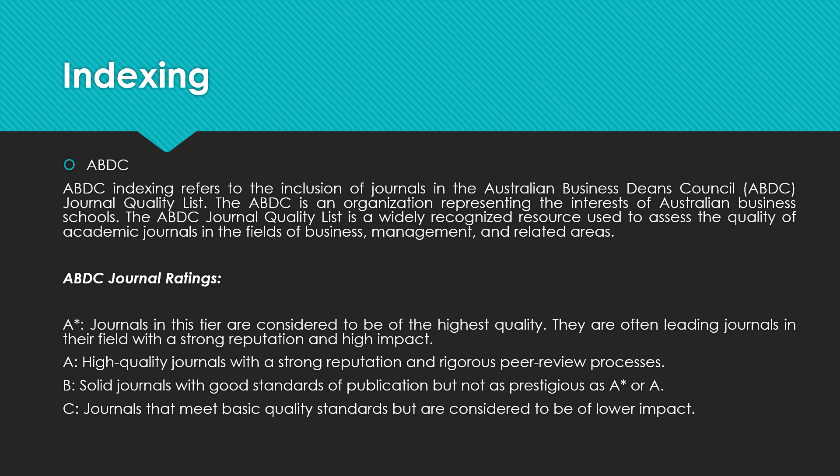In ABDC journal ratings, it varies from A-star to C. A-star indicates the highest quality journal. A is high quality. B is a solid journal with good standards of publication but not as prestigious as A-star or A. And C journals are those that meet basic quality standards but are considered to be of lower impact.